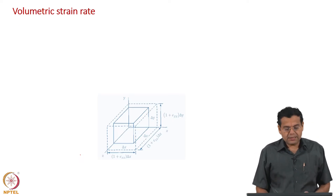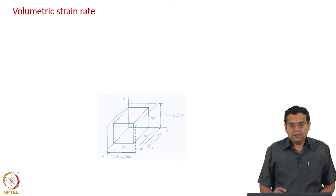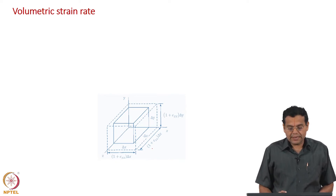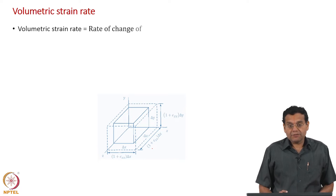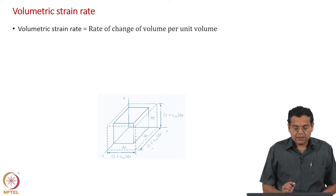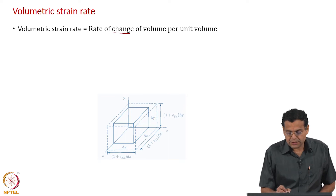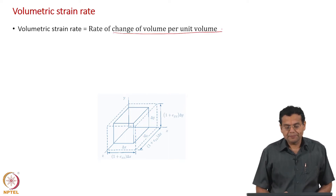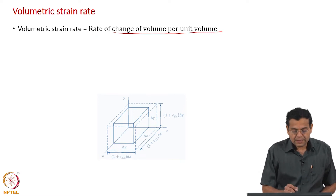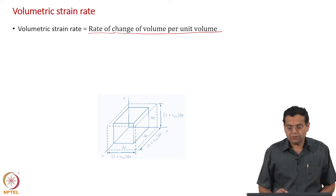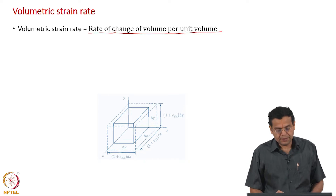Analogously, we can relate the volumetric strain rate to the velocity gradients. First, let us define volumetric strain rate. For volumetric strain it was change of volume per unit volume, and so the volumetric strain rate is the rate of change of volume per unit volume.